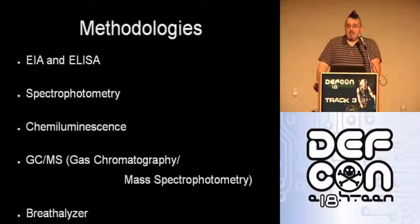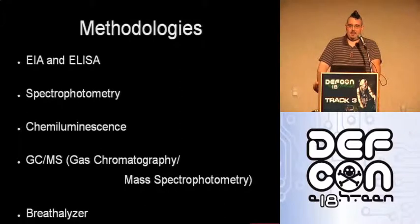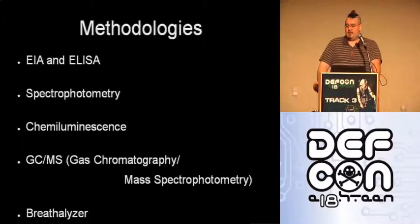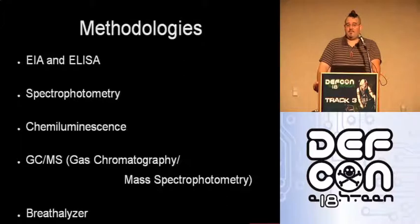GC-MS is considered the gold standard. Many tests like ELISA can read at best to about 50 micrograms per deciliter. GC-MS can get down to at least 5 micrograms per deciliter and gives a very definitive quantitative number.